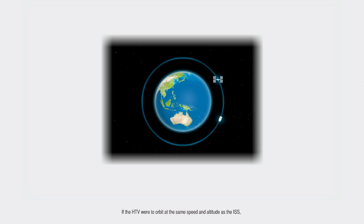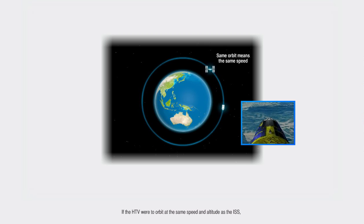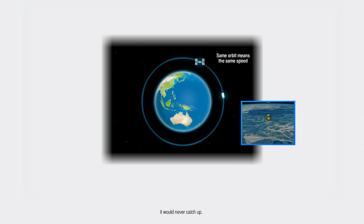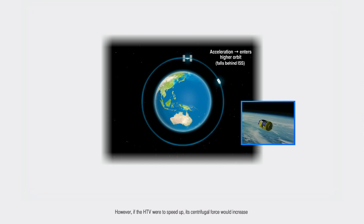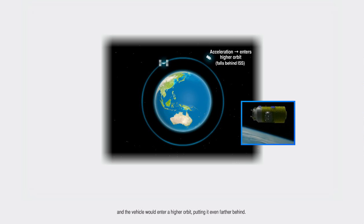If the HTV were to orbit at the same speed and altitude as the ISS, it would never catch up. However, if the HTV were to speed up, its centrifugal force would increase, and the vehicle would enter a higher orbit, putting it even farther behind.